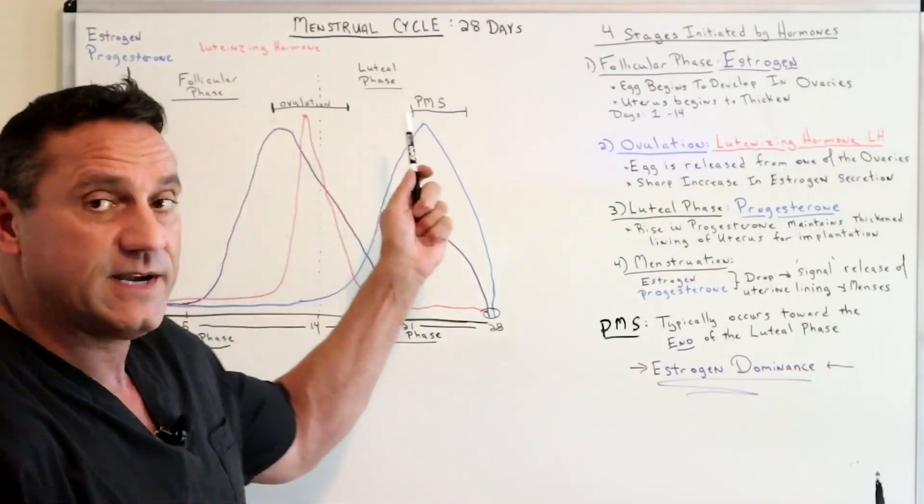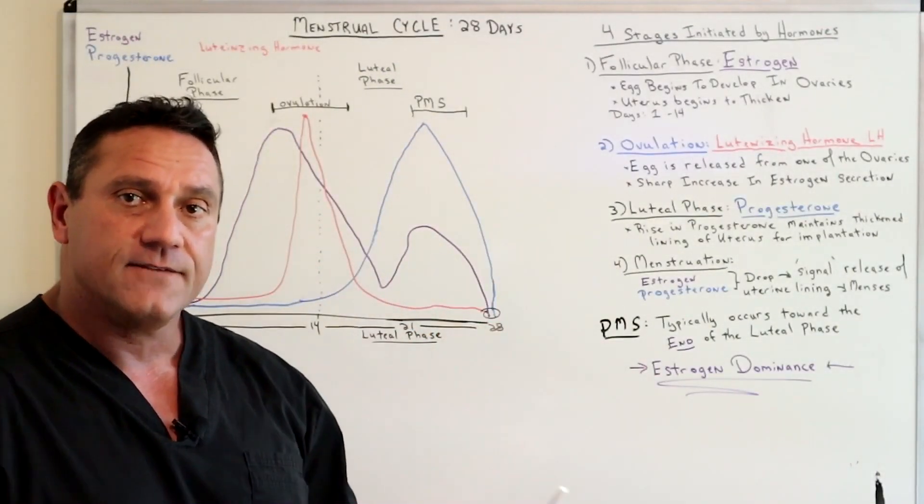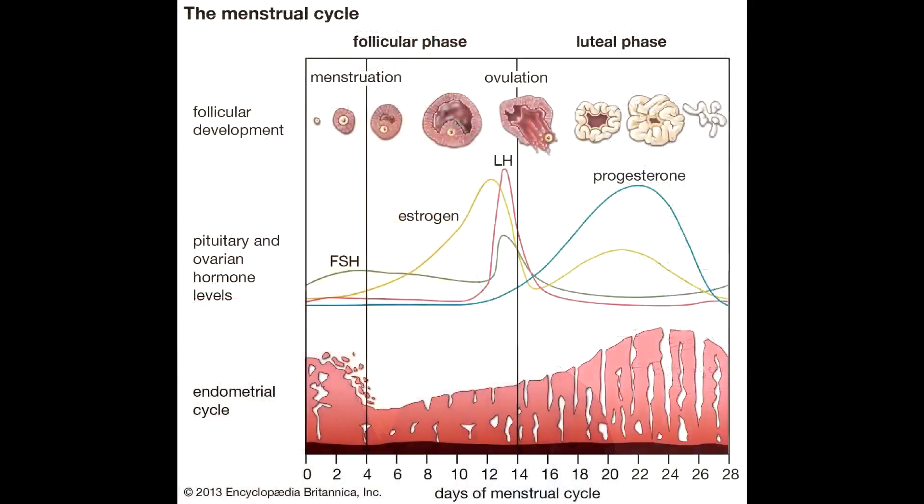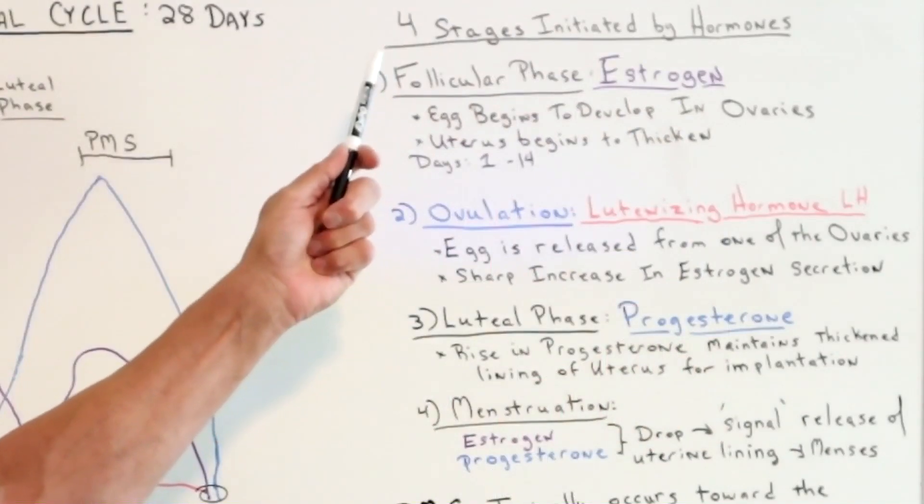Now the menstrual cycle is a 28-day cycle. On average, it's 28 days. So every 28 days, the female body goes through a cycle and it sheds the uterine lining at days 0 through 5. So it divides into four different phases.